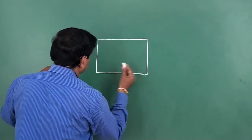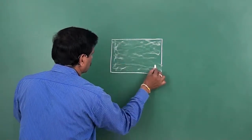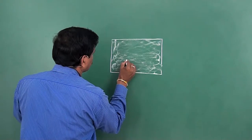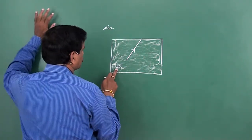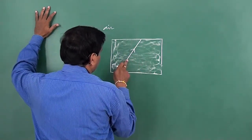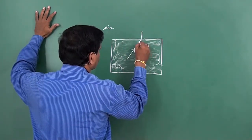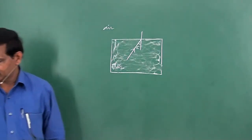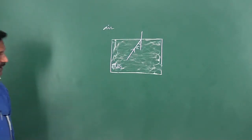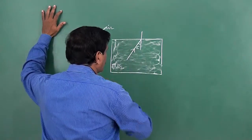Next problem: a ray of light travels from an optically denser to rarer medium. The critical angle for the two media is C. The maximum possible angle of deviation of the ray will be. Here, light ray travels from denser to rarer medium — say glass to air, where glass is the denser medium. The angle of incidence is given, and the critical angle is C. We need to find the maximum possible angle of deviation of the ray.